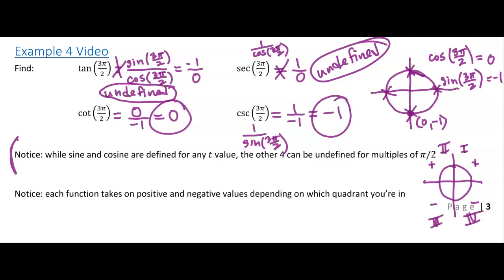And that's not going to be the same for cosine or your other functions. So for cosine, cosine is your x value. So it's going to be positive in quadrant 1 and quadrant 4, but it's going to be negative in quadrant 2 and quadrant 3.